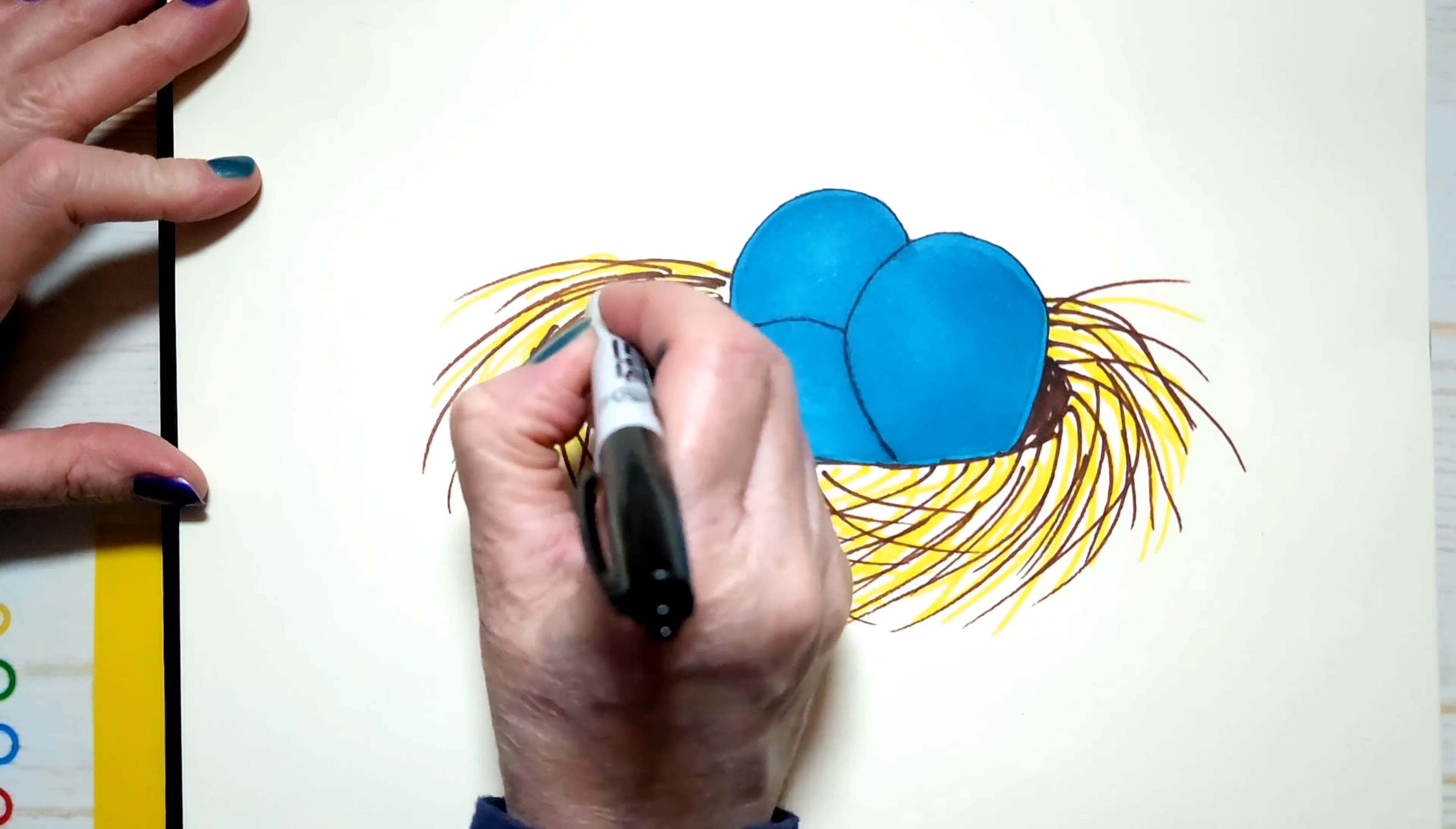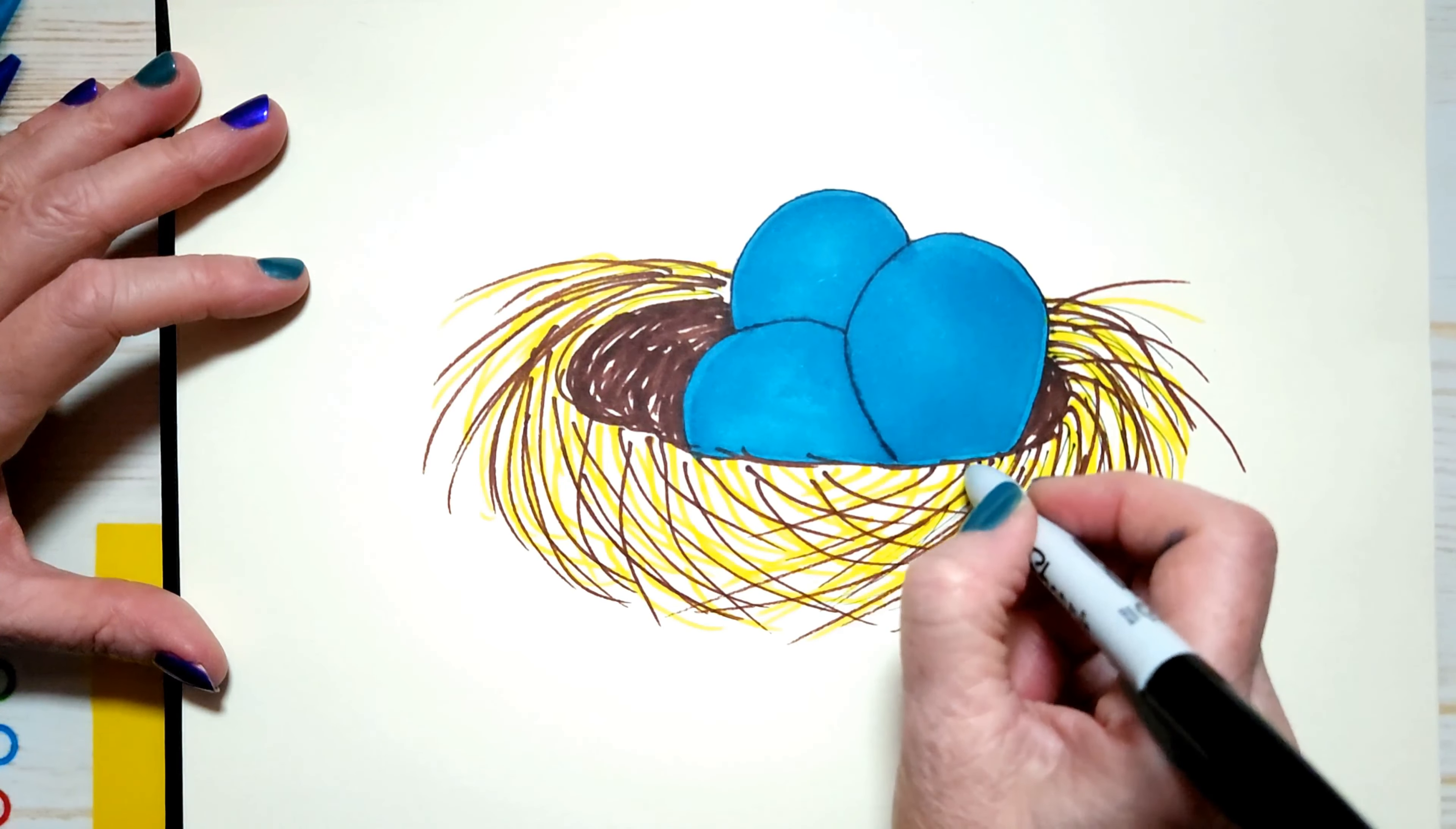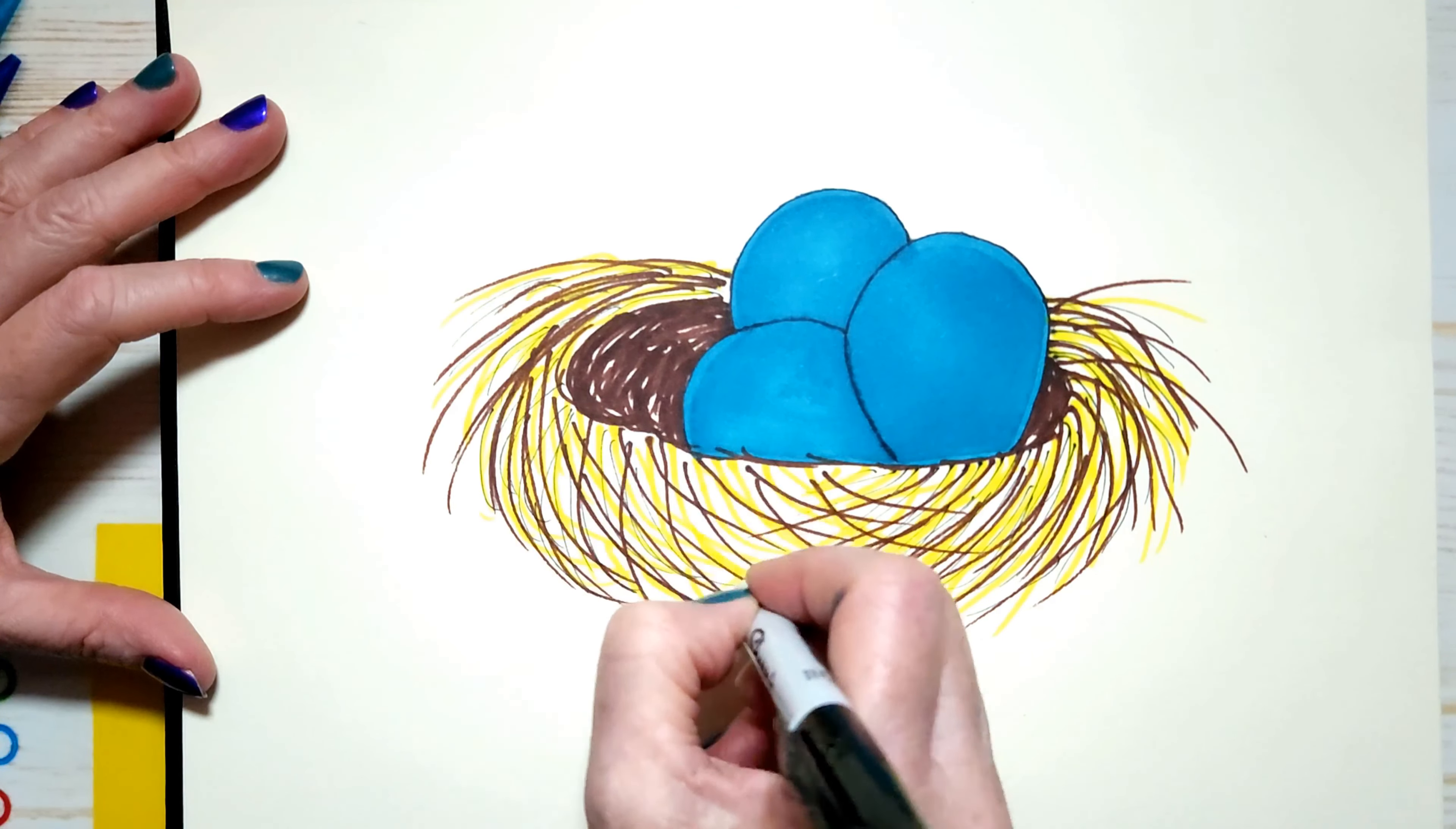And I'm going in and I'm doing the same thing everywhere that I have the yellow. It just sort of fills it in and it gives it a little more detail. I'm just being careful not to get any black into the egg or the eggs.